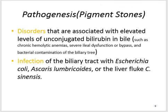Pathogenesis of pigment stones: disorders associated with elevated levels of unconjugated bilirubin in bile, such as chronic hemolytic anemia, severe ileal dysfunction or bypass, and bacterial contamination of the biliary tree — infection of the biliary tree with E. coli, Ascaris lumbricoides, or the liver fluke Clonorchis sinensis.